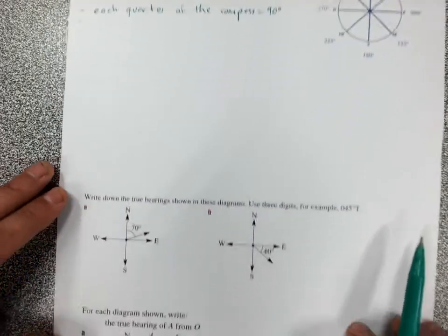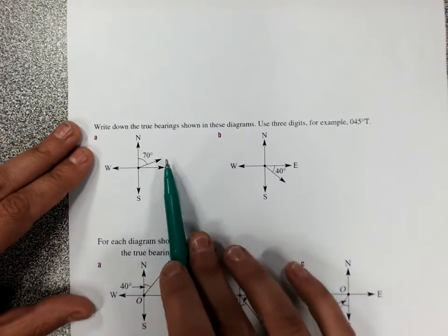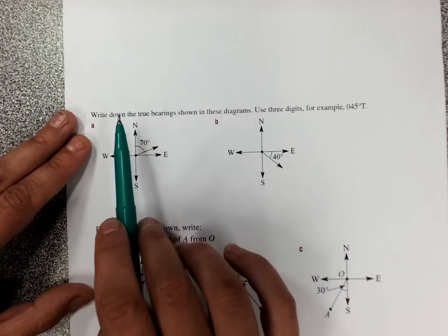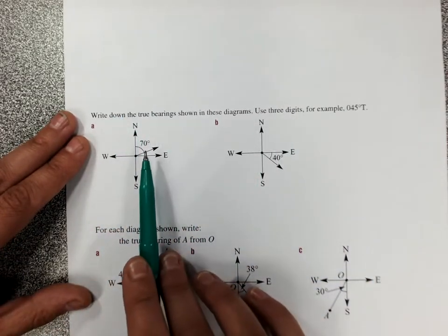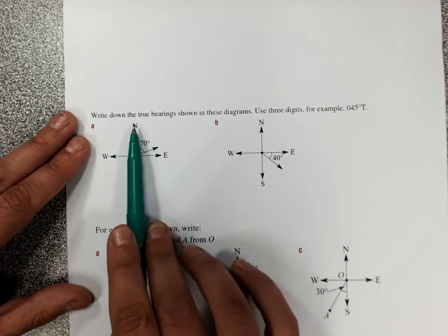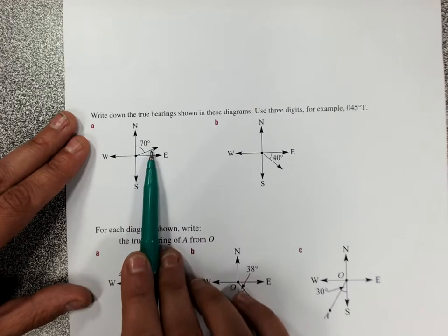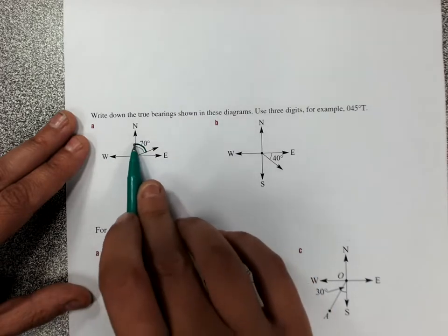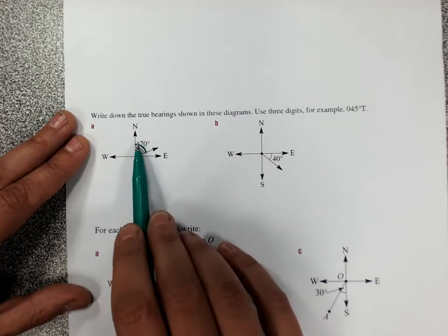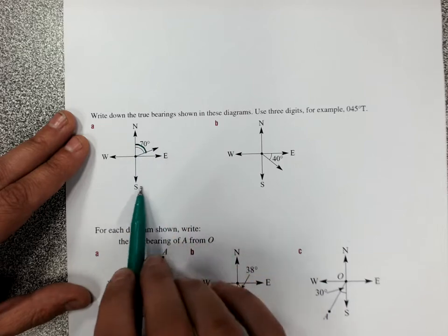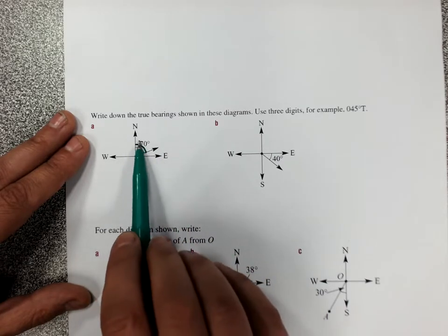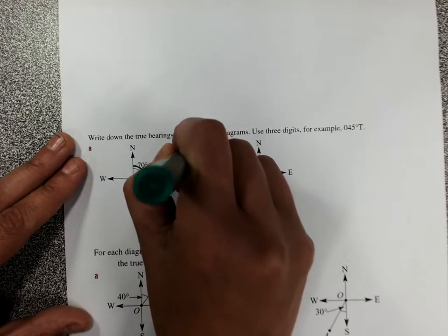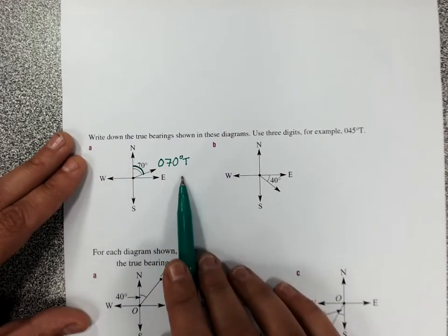And we'll have questions where we have to convert directions on a compass rose into true bearings, so I've asked you to write these as true bearings. Now some of them are really easy. We've got to go from north and around until we hit the line of the direction that we're asking for. And we go clockwise from north, always clockwise. Now this one is 70 degrees around clockwise from north, so this is 070 degrees T. That one's nice and easy.